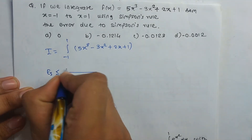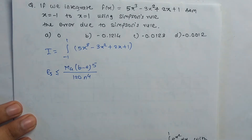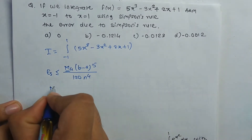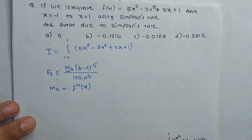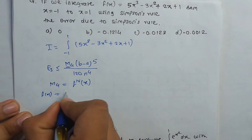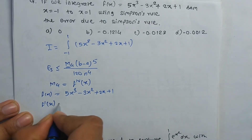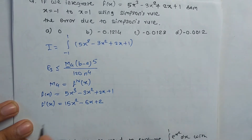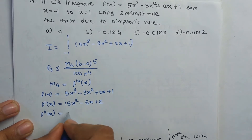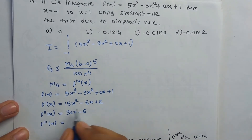The formula for the error due to Simpson's rule is: Error ≥ M4 × (b − a)⁵ / (180n⁴). We need to find M4, the maximum value of the fourth derivative f⁴(x). So f(x) = 5x³ − 3x² + 2x + 1. First derivative: f'(x) = 15x² − 6x + 2. Second derivative: f''(x) = 30x − 6. Third derivative: f'''(x) = 30. Fourth derivative: f⁴(x) = 0.